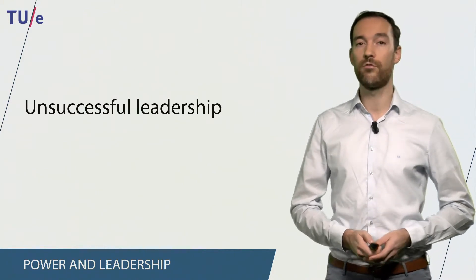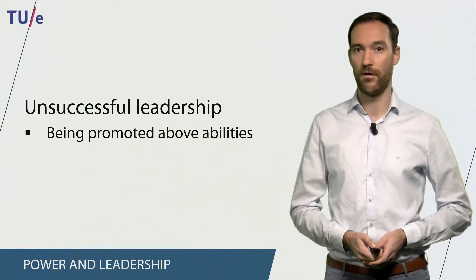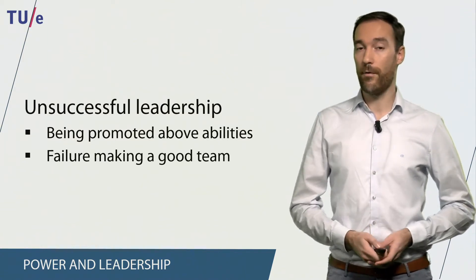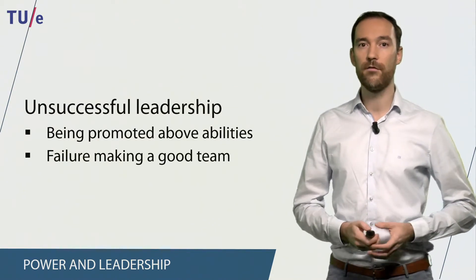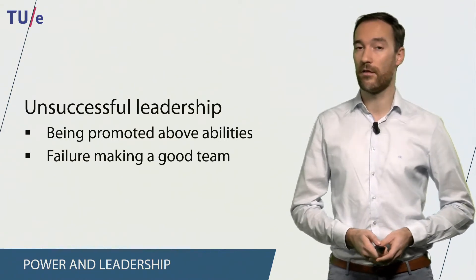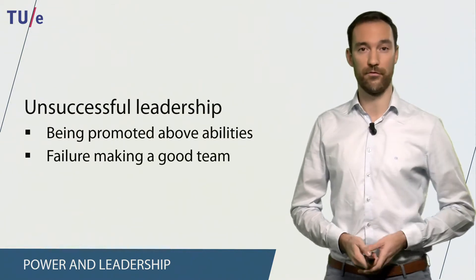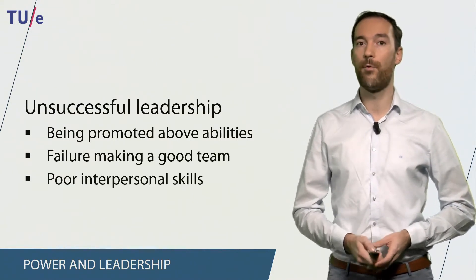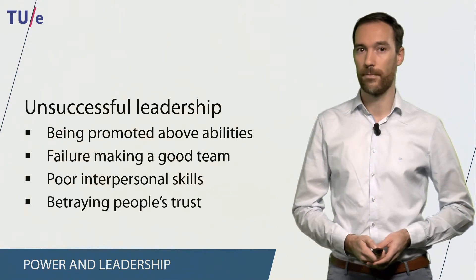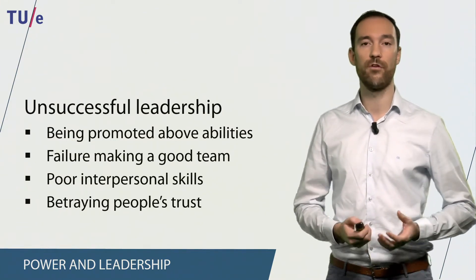Unsuccessful leadership has been shown to be related to a number of different factors. The first is when a person is promoted above their abilities, meaning they are not competent enough to be a leader. Unsuccessful leadership also occurs when the leader fails to make a good team — if you appoint members based on loyalty and trust rather than competence, you are less likely to have a good team. Poor interpersonal skills — not being strong in communicating or persuading others — and betraying people's trust also lead to unsuccessful leadership, as a group cannot work properly without trust.